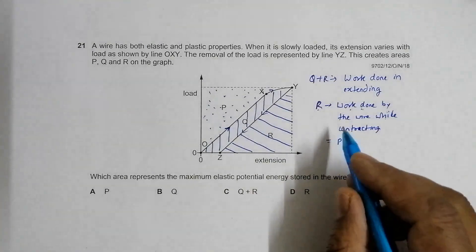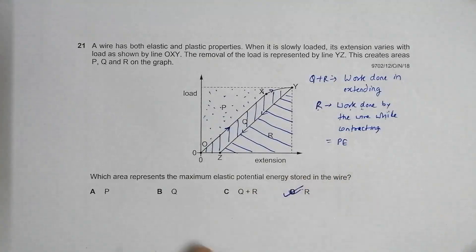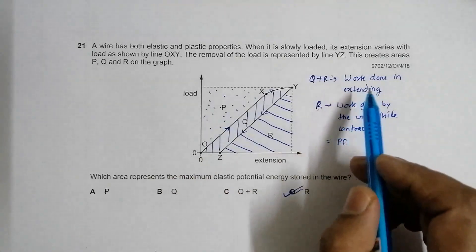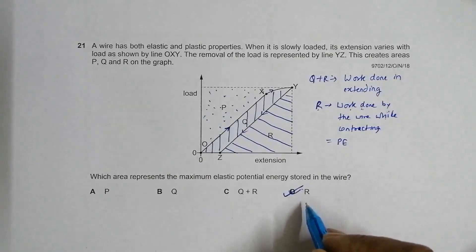That's why R should be the elastic potential energy. The correct choice is choice D. Q is the energy lost, Q plus R is work done by us while extending the wire. Our correct choice is D.